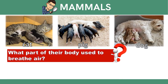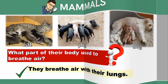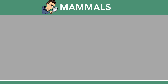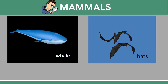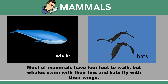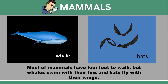What part of their body do they use to breathe air — gills or lungs? They breathe air with their lungs. Most mammals can walk, but there are also mammals that can swim and fly. For example, whale and bat. Most mammals have four feet to walk, but whales swim with their fins and bats fly with their wings.